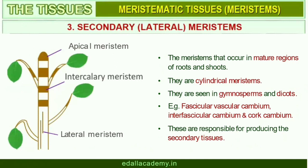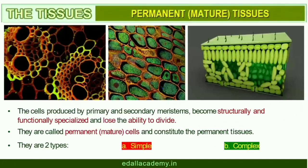These are responsible for producing secondary tissues. Following division of cells in both primary and secondary meristems, the newly formed cells become structurally and functionally specialized and lose the ability to divide. Such cells are termed permanent or mature cells and constitute the permanent tissues. During the formation of the primary plant body, specific regions of the apical meristem produce dermal tissues, ground tissues, and vascular tissues.